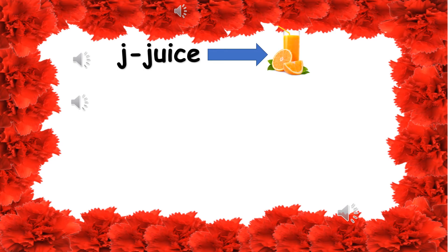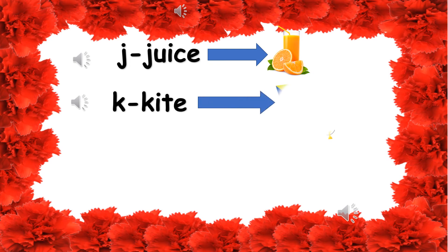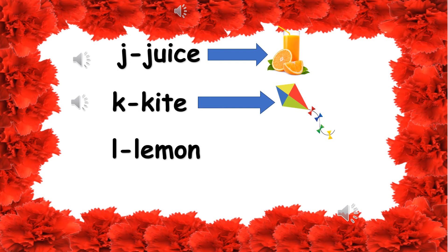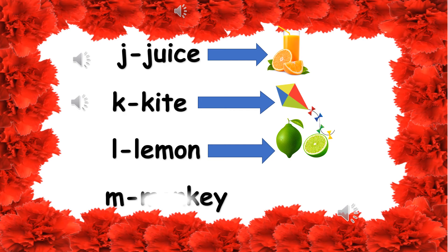J — Juice. K — Kite. L — Lemon. M — Monkey.